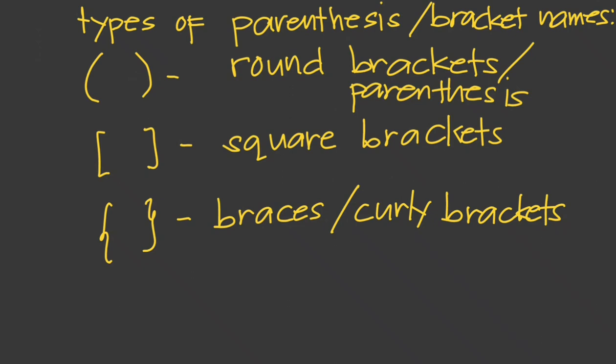If there are several parentheses in a problem, we start with the innermost parentheses and work our way out. Inside each set of parentheses, we simplify using the order of operations as well. To make it easier to identify which parentheses goes with which, different types of grouping symbols are used — such as braces, square brackets, or round brackets.